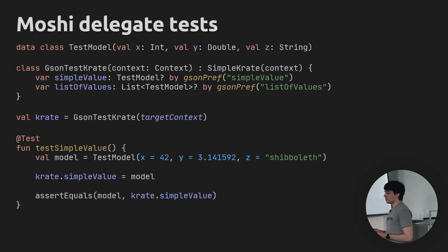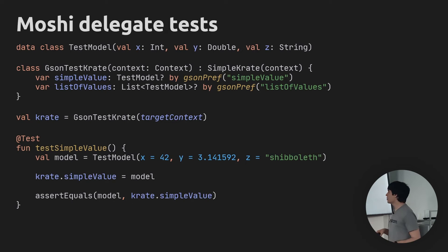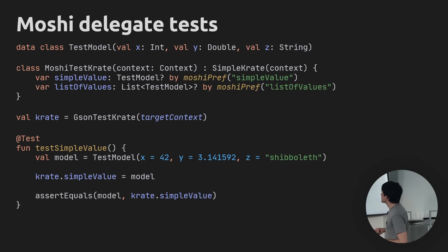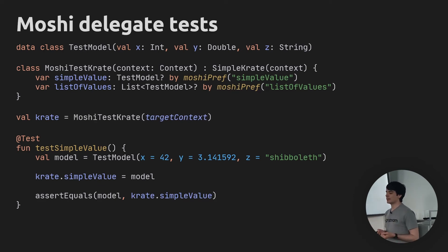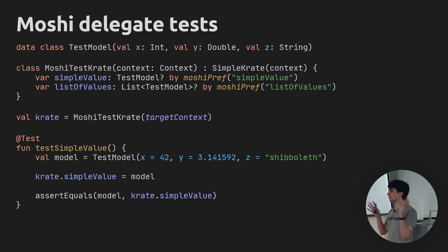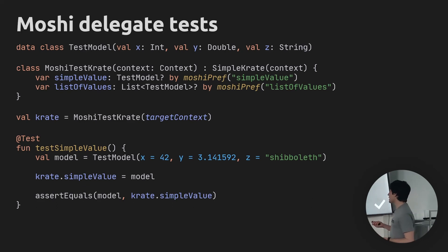With this solution, we can run our tests to see if it actually worked. I copy-pasted the entire Gson-based module and renamed everything from Gson to Moshi. We're using the new Moshi implementation, but the actual test code is the same — create a model, put it in the crate, read it back, assert on it. If we do this with a simple value, the test passes. But when we check the other test where we're trying to store and restore a list of models, that test fails.